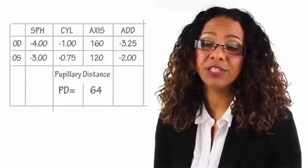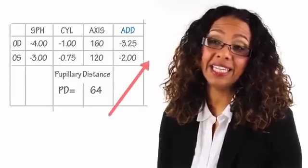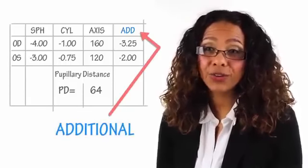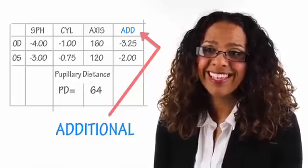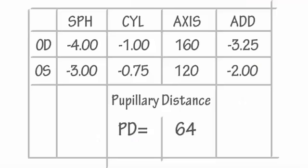The next term you'll see on your prescription is ADD, which stands for additional — probably the easiest term on there. ADD is used for bifocal and progressive lenses, and it's something which helps the vision by adding an additional feature onto the lens to help with activities such as reading or watching television.